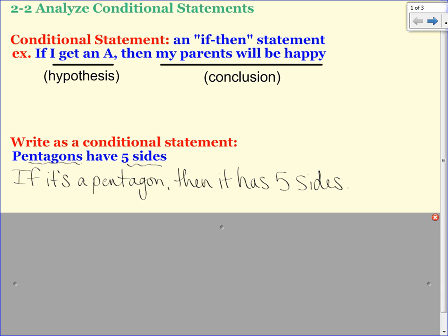So that's the biggest mistake is kids would switch this around and say if it has five sides, then it's a pentagon. That's not writing it as a conditional. Keep it in the same order.